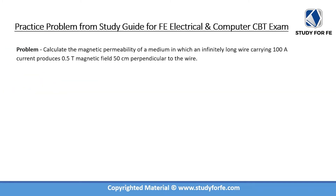Let's solve a practice problem involving magnetic permeability. We are asked to calculate the magnetic permeability of a medium in which an infinitely long wire carries a current of 100 amps — this is I — and produces a magnetic field of 0.5 teslas — this is B — at a distance of 50 centimeters perpendicular from the wire — this is r. We are given I, B, and r, and asked to calculate magnetic permeability.